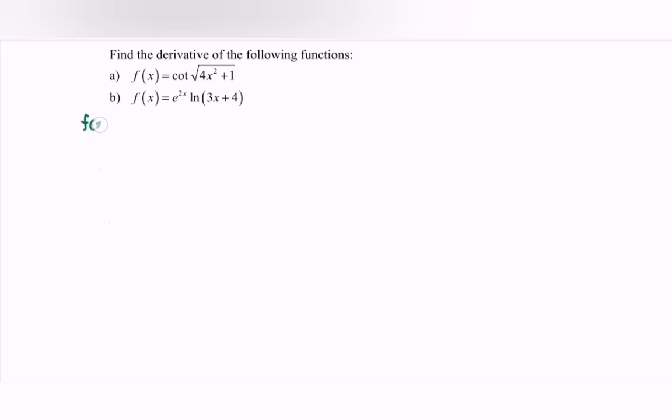So here we have part a: f(x) is equal to cot of the square root of 4x² plus 1 to the power of 1/2. Kindly differentiate this situation.